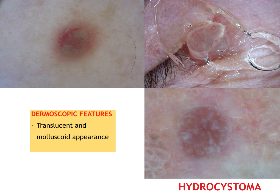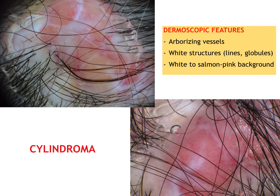Another pink adnexal benign tumor often seen during our daily practice is hydrocystoma, whose most frequent dermoscopic feature is that of a translucent skin-colored, yellow or bluish lesion. Cylindroma is a slowly growing benign adnexal tumor occurring most commonly on the head, neck and scalp. Its dermoscopic pattern is rather repetitive and includes arborizing vessels, white lines and globules on a salmon-pink background.